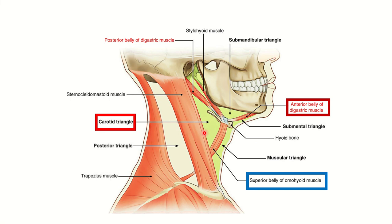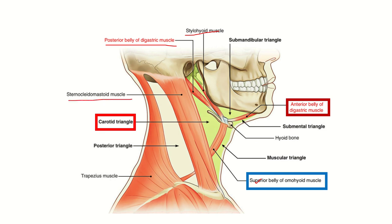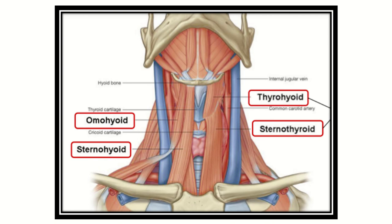In this picture, we can see the carotid sheath located within the carotid triangle. Just behind the carotid triangle is the sternocleidomastoid muscle, and here is the superior belly of the omohyoid muscle. We can also see the posterior belly of the digastric muscle and the stylohyoid muscle — all very closely located to the carotid sheath.